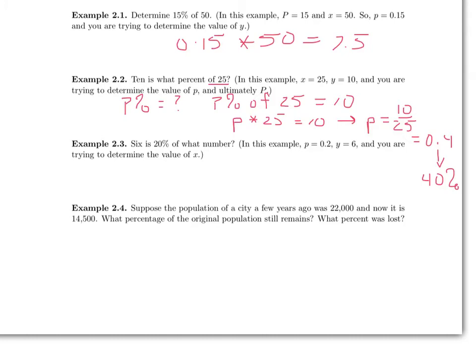Let's look at example 2.3: 6 is 20% of what number? Now, in this case, there's a different component that we are looking for. We are told that 20% of some number x that we don't know is equal to 6, and we need to determine x. Let's rewrite this as an equation. 20% as a decimal is 0.2. We multiply that by our unknown number, and the result has to be 6.